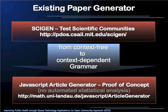The SCIgen Perl script run from a command line is replaced by a JavaScript paper generator that is more flexible, allows for user interface design, and is more convenient for the prospective user. It is, however, just a proof of concept so far.